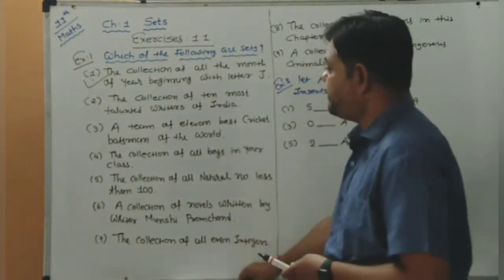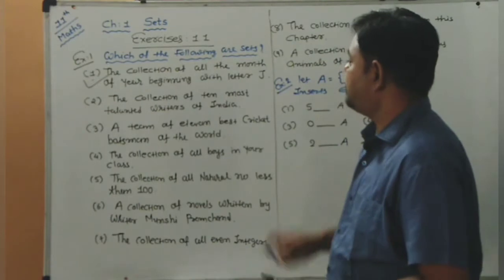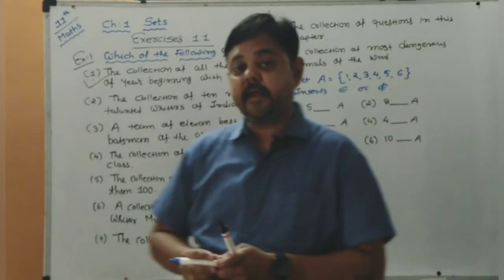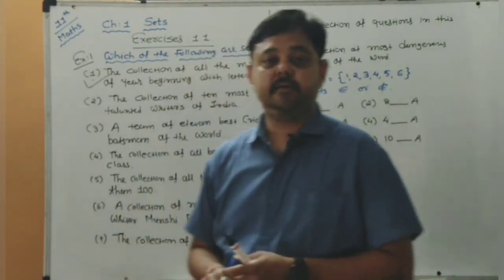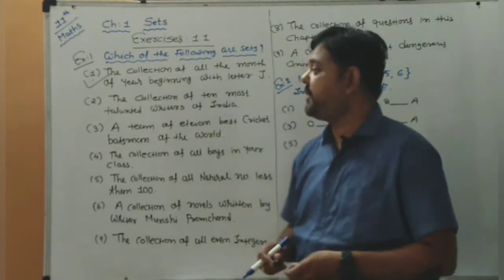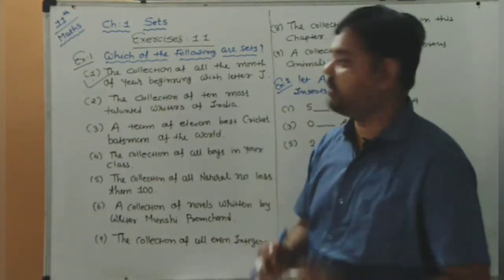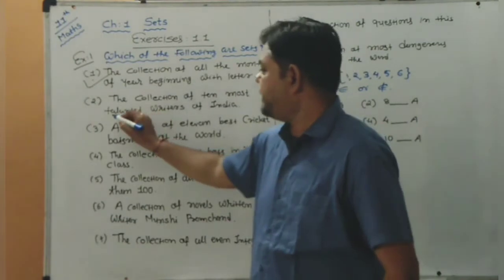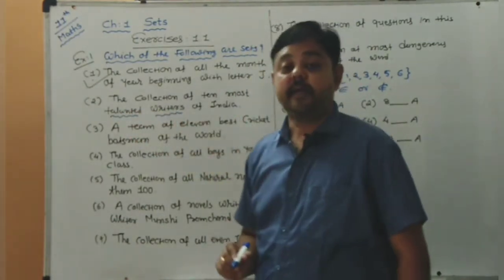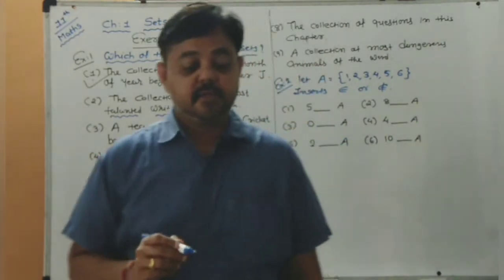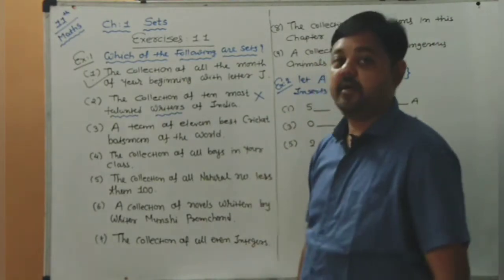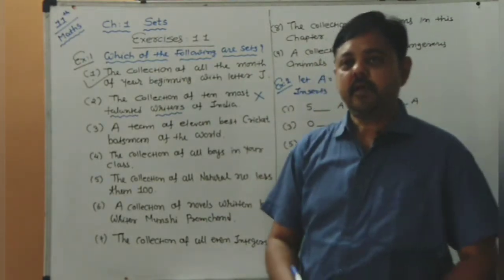Next, the second point: the collection of ten most talented writers of India. This is a collection, but the objects are not specific — 'talented' is subjective. The collection would differ from person to person, so this is not a set.